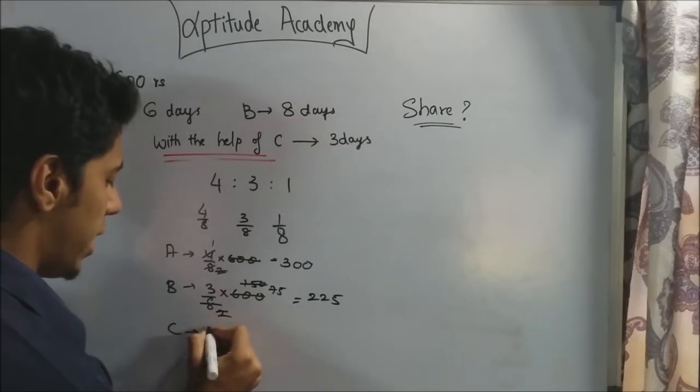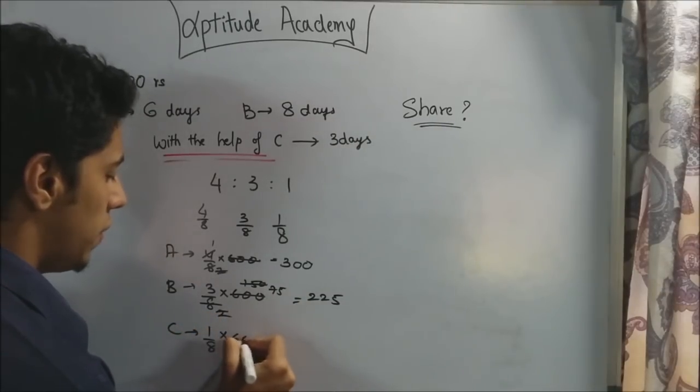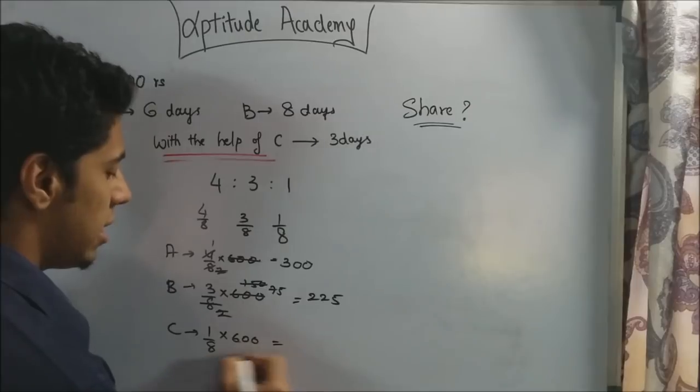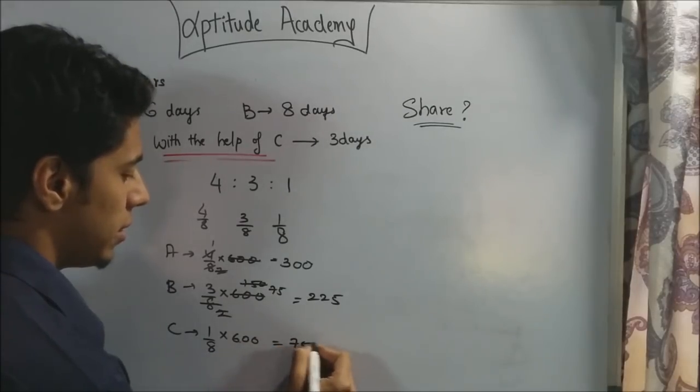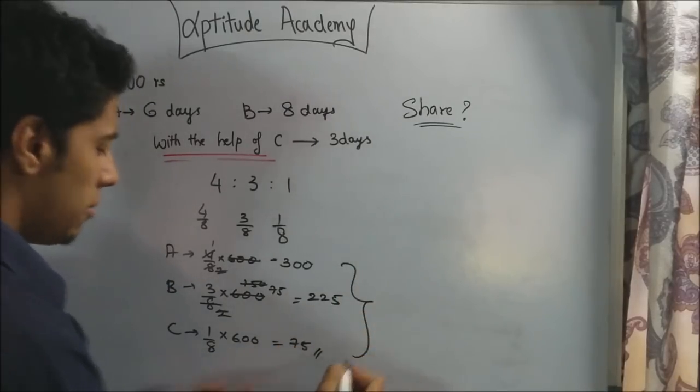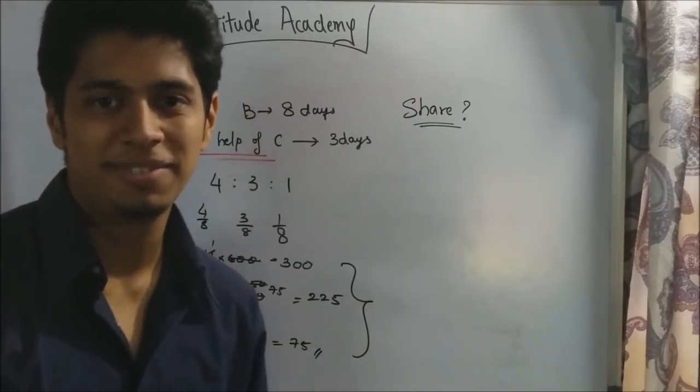Similarly C should get 1 by 8th of 600 rupees. 600 divided by 8 is 75. So A should get 300, B should get 225, and C should get 75 rupees. Easy, right?